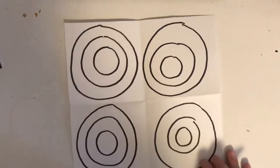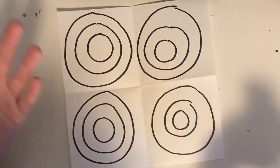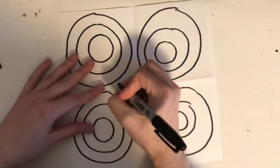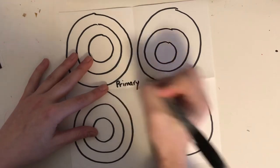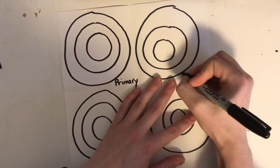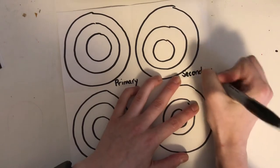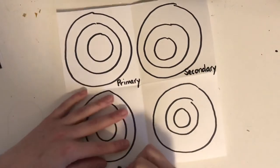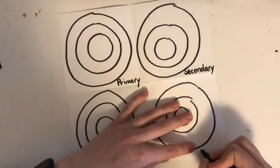Then we're going to write something in all of these. So in this one we're going to write, actually it doesn't really matter which one is which. We're going to write primary, and another one we're going to write secondary, and then warm and cool.